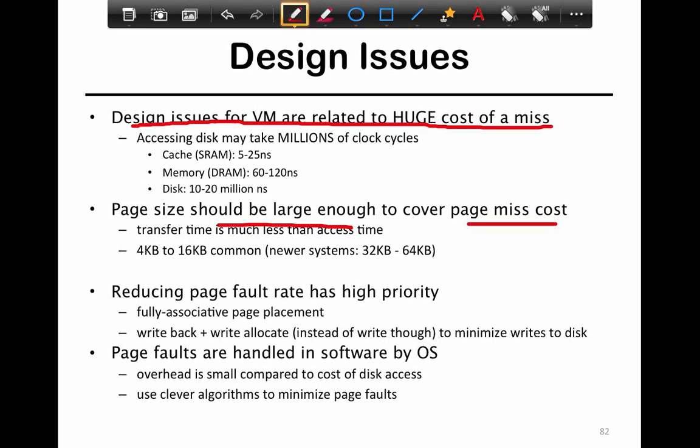Because of this, you don't worry so much about internal fragmentation within a page — for example, if you allocate 4 kilobytes and the program only uses 1 kilobyte. The reason is that if you had smaller pages, then on every demand miss, if you're bringing only one page at a time, and an application uses a lot of pages, you're going to be paying a huge penalty for page faults.